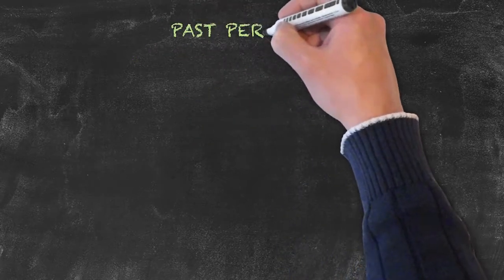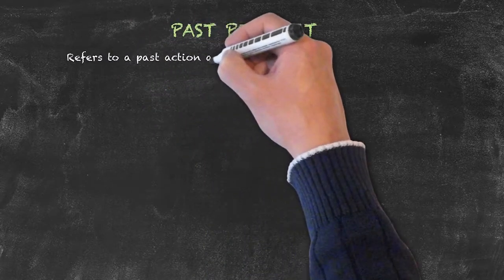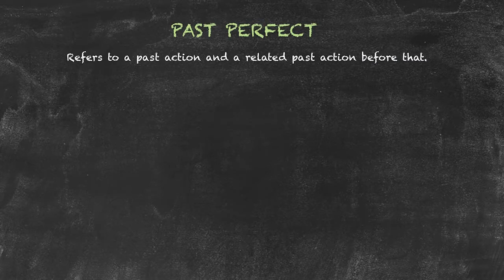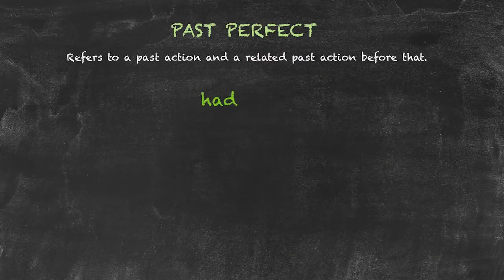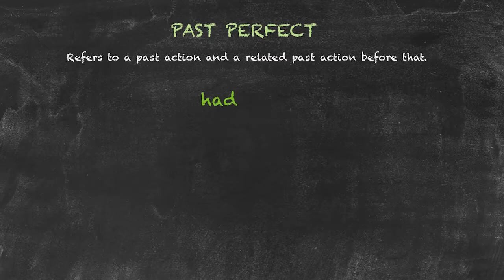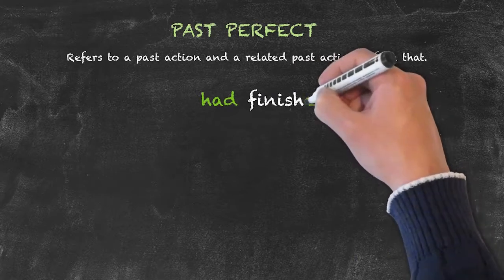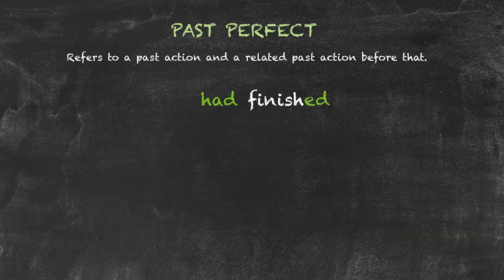And now for the past perfect tense. This tense is used to talk about a past action and a related past action before that. In this case, we're relating two past actions to each other. We do so by using the auxiliary verb to have, but because we're talking about the past, we need to conjugate that auxiliary verb into the past. So we'll consistently use had no matter what our subject is for the sentence. The other critical part of the formation of this tense is the fact that the main verb needs to be put into the past participle form. Here, we've used a regular verb, to finish, and we've added ed.